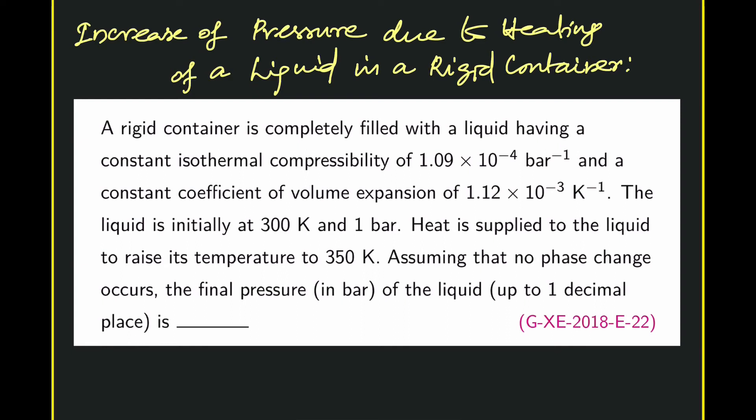This problem is about finding the increase of pressure due to heating of a liquid in a rigid container. Let us read the problem statement. A rigid container is completely filled with a liquid having a constant isothermal compressibility of 1.09 × 10⁻⁴ bar⁻¹ and a constant coefficient of volume expansion of